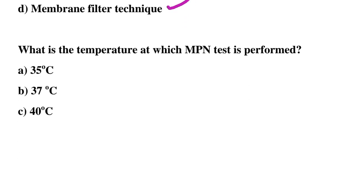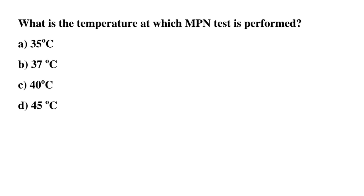Next question: what is the temperature at which the MPN test is performed? Option A: 35 degree Celsius, option B: 37 degree Celsius, option C: 40 degree Celsius, option D: 45 degree Celsius. The correct answer is option B: 37 degree Celsius.